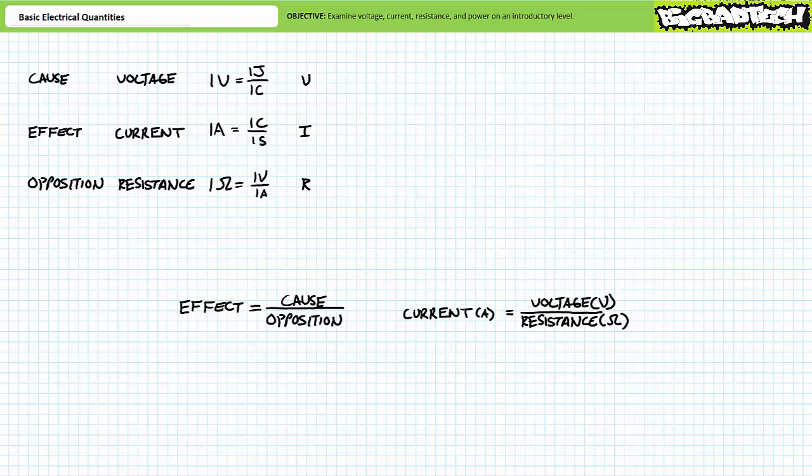Conversely, if opposition was held constant and cause decreased, effects should also decrease. Stated another way, same resistance, less voltage yields less current.